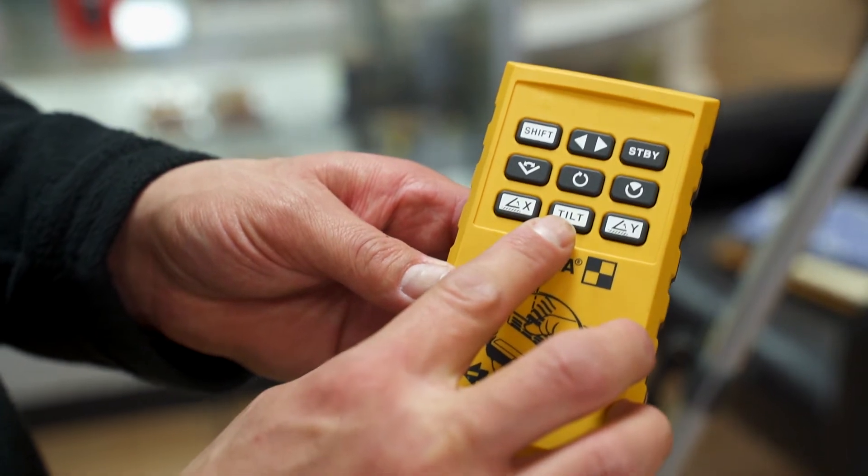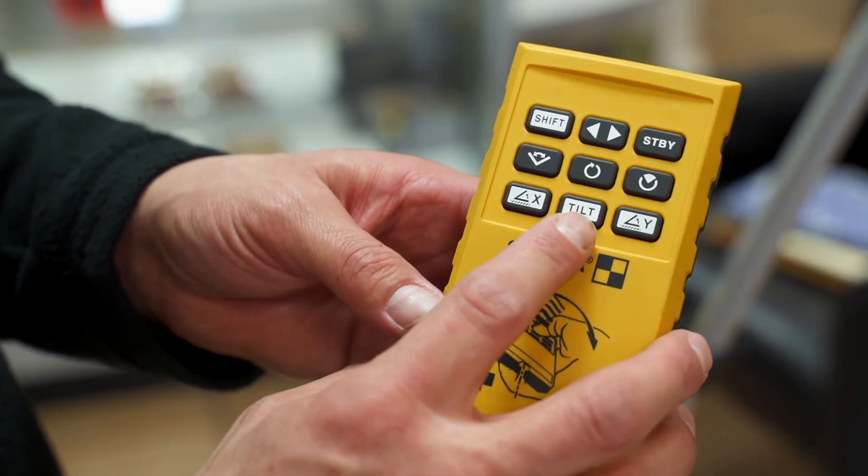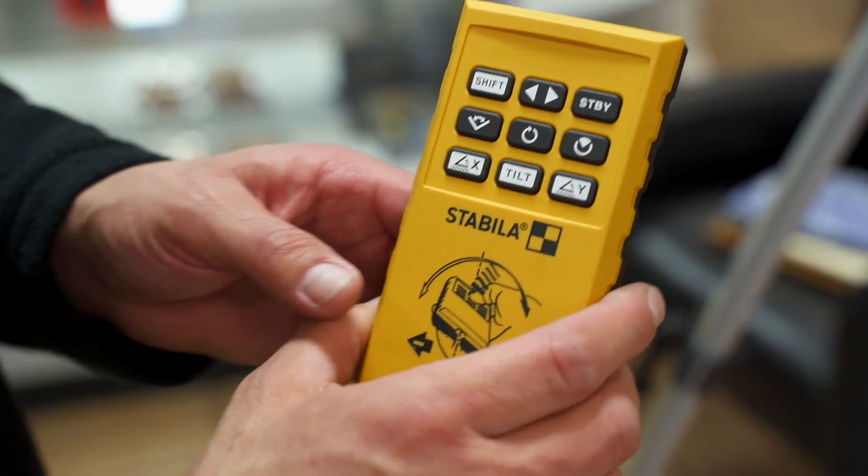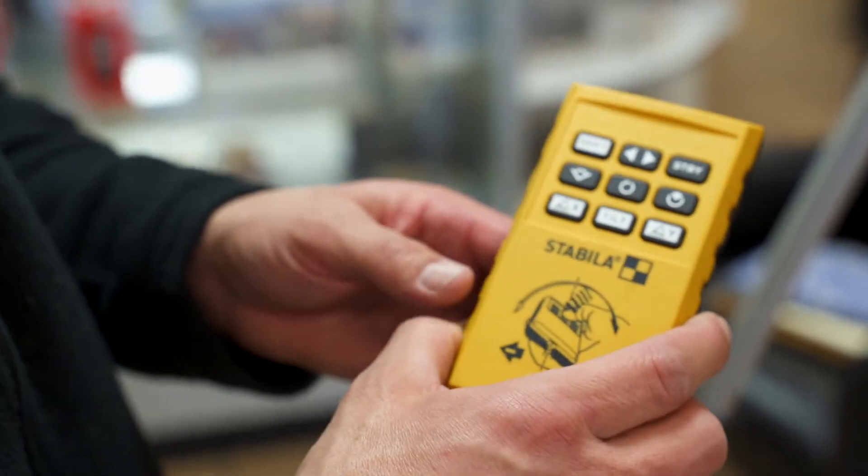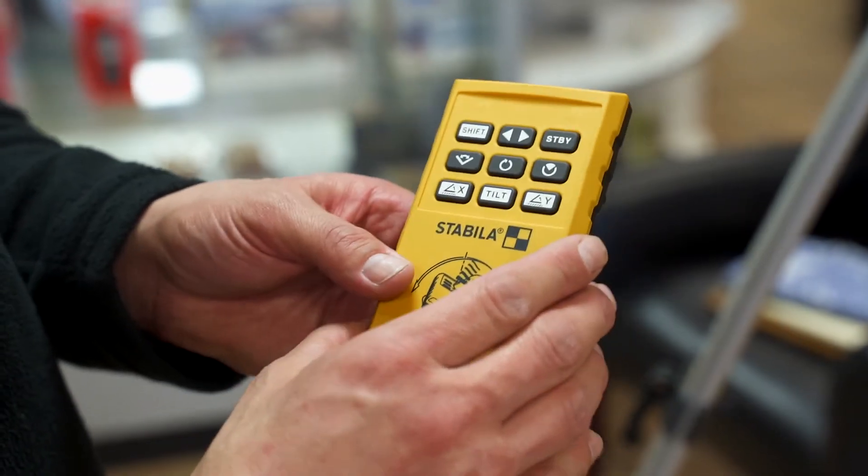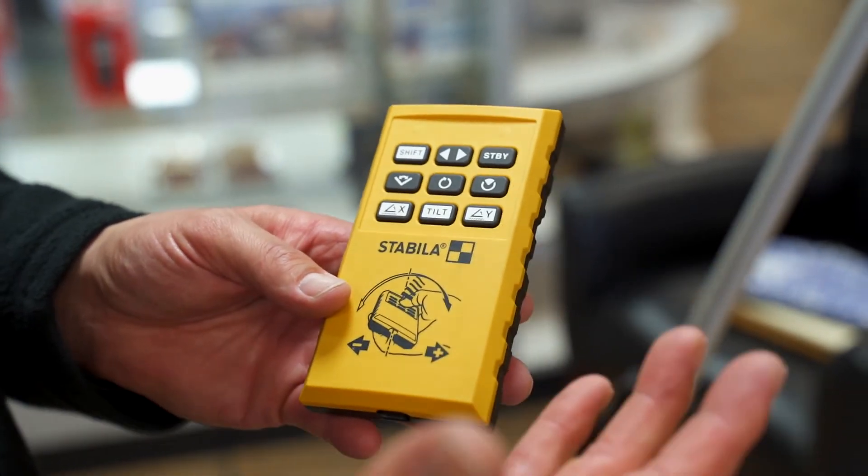And on the controller right here is called a tilt function button. What it does is it allows the user to engage the laser itself to let the user know that if it's ever knocked off of settings based off of any type of vibration on a job site from bulldozers or any type of situation where someone may be walking by the laser and hit it.